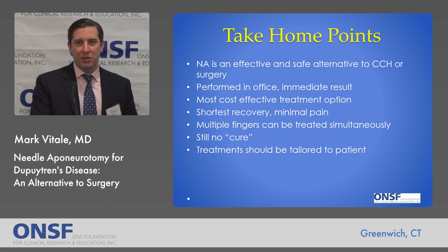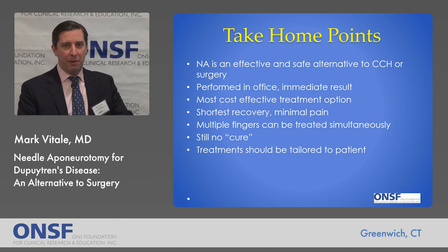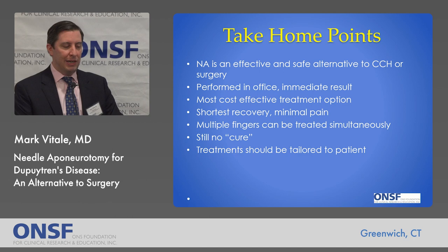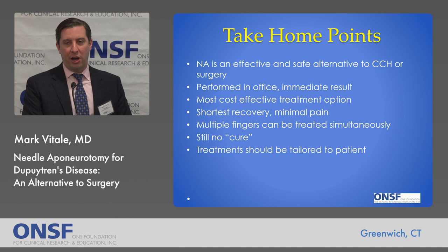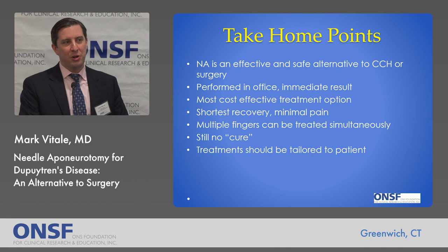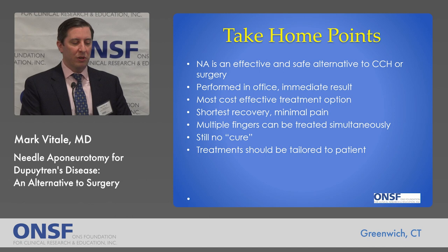Just a few take-home points: now that hand surgeons are becoming more interested in learning about and performing needle aponeurotomy, it is really an effective and safe alternative to surgery or collagenase. It can be performed in the office, there's an immediate correction, it's the most cost-effective treatment option, it has the shortest recovery and minimal pain, and multiple fingers can be treated simultaneously. Unfortunately, there's still no cure for Dupuytren's, so it's important for patients to know that any one treatment is unlikely to completely eliminate the underlying disease — treatment should be tailored to the individual patient.